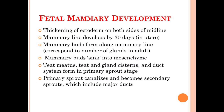Moving further, the development of the mammary gland inside the fetus involves the thickening of the ectoderm on both sides of the midline. The mammary line will develop by 30 days in utero, basically when the fetus is present inside the mother's womb. These mammary lines are the precursors to the mammary glands and the teats. After the development of the mammary line, the mammary buds will form.